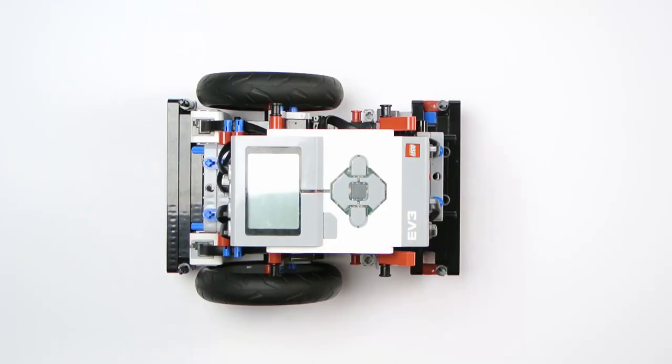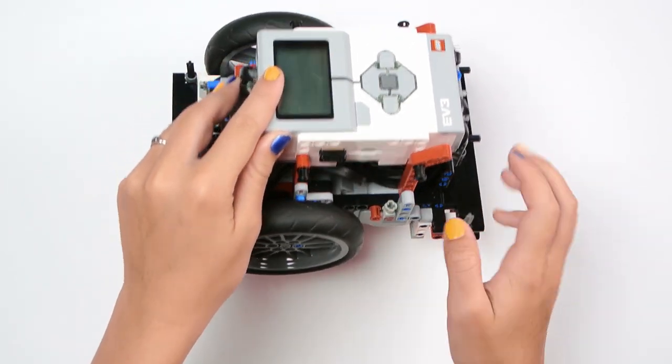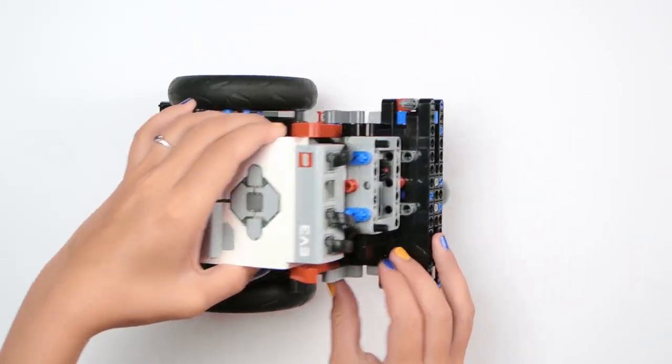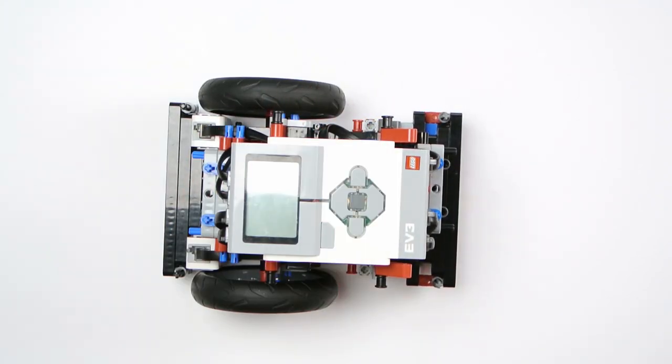We used a rechargeable battery for our robot. It charges in the back. The advantages of using a rechargeable battery are that it's smaller, it's environmentally friendly because you don't have to throw out used batteries, and we don't have to take the robot apart to change the batteries.